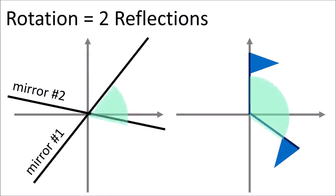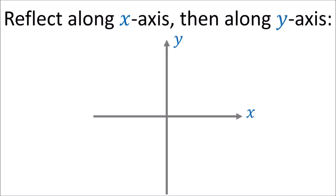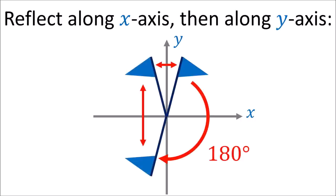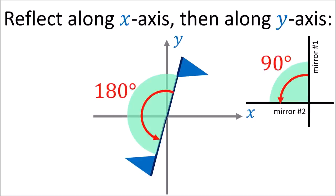Also notice that the angle of the flag's rotation is equal to twice the angle between the two mirrors that we used. So if the angle of rotation is theta, then the angle between the mirrors is theta over two. Let's try reflecting our polyvector once along the x-axis and once along the y-axis to see what we get. Geometrically, reflecting along x and then along y is a 180-degree rotation in the xy plane. This makes sense since the angle between our mirrors is 90 degrees and the resulting rotation is twice that, 180 degrees.